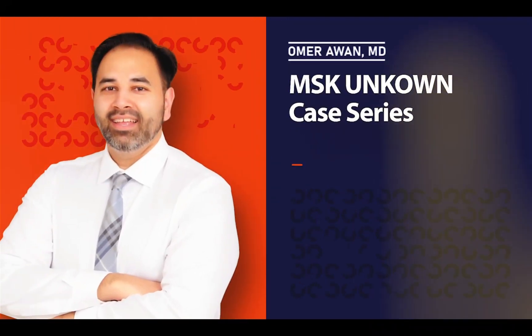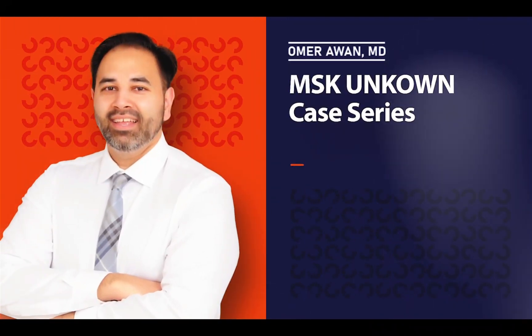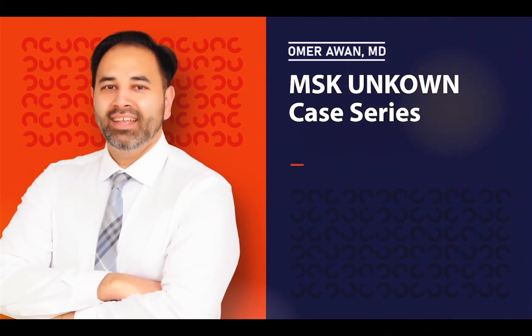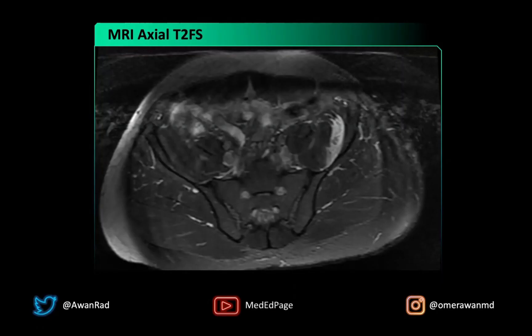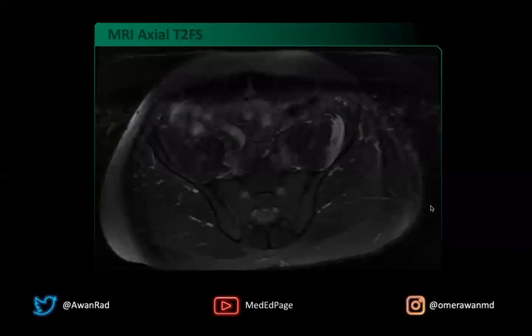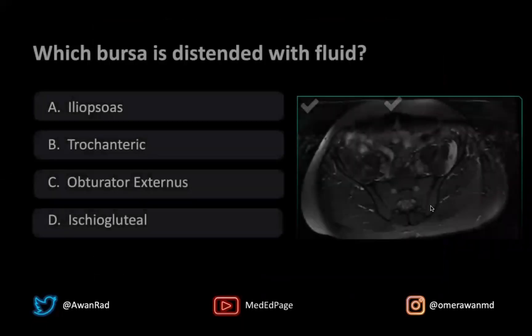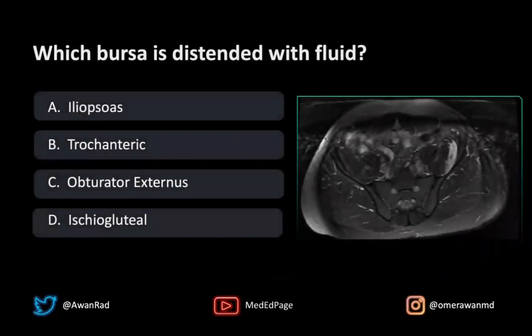Hello and welcome to MSK Unknown Case 89. This is an MRI axial T2 fat sat image through the pelvis. The high yield question we have for you is: which bursa is distended with fluid? Is it the iliopsoas bursa, the trochanteric bursa, the obturator externus bursa, or the ischiogluteal bursa?